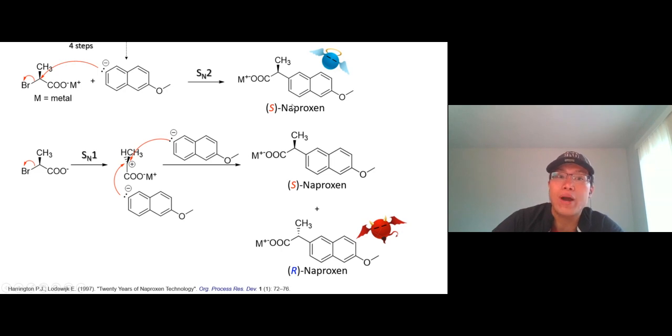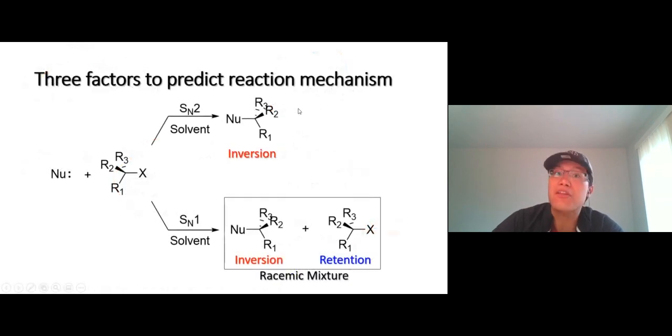Now, to be able to determine if a reaction goes SN1 or SN2, there are three things that you have to consider - three factors: one, nucleophile; two, the structure of the alkyl halide; and three, the solvent. We're gonna go through this one by one, and at the end you should be able to predict the product or suggest a synthesis. Let's take a look at the next video, starting with the nucleophile.